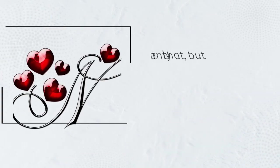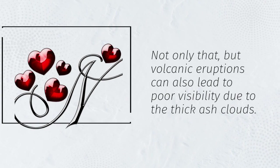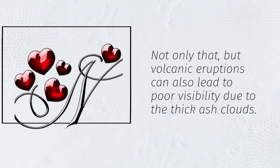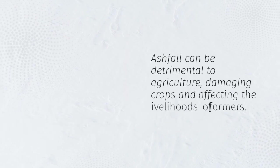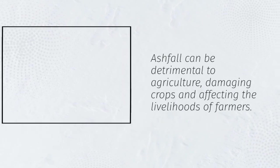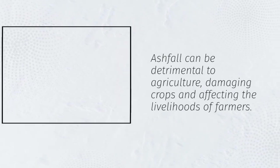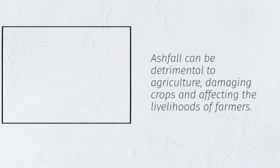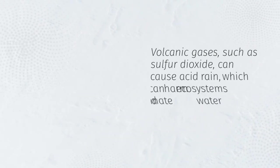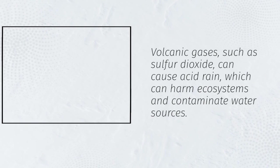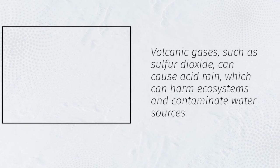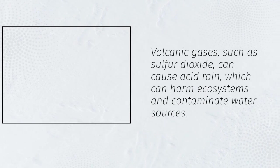Not only that, but volcanic eruptions can also lead to poor visibility due to the thick ash clouds. Ash fall can be detrimental to agriculture, damaging crops and affecting the livelihoods of farmers. Volcanic gases, such as sulfur dioxide, can cause acid rain, which can harm ecosystems and contaminate water sources.